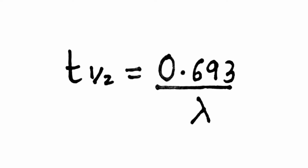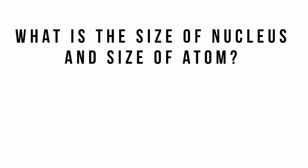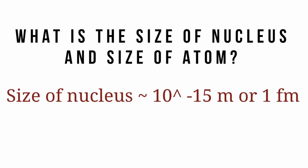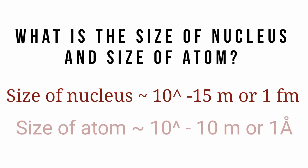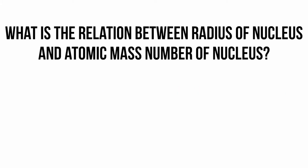What is the size of the nucleus and what is the size of the atom? The size of the nucleus is of the order of 10⁻¹⁵ meters, or one fermi. The size of the atom is of the order of 10⁻¹⁰ meters, or one Angstrom.